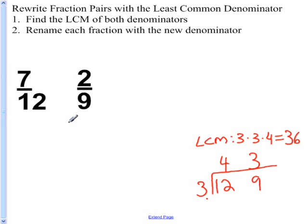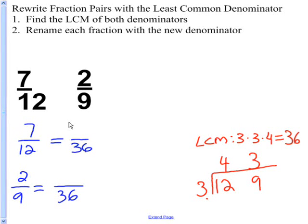Now, I want to rewrite each of these fractions with 36 in the denominator. So 7/12, I want to rewrite it so it has 36 in the denominator. 2/9, I want to rewrite that so it has 36 in the denominator. So what I do is I think to myself, 12 times what gives me 36? And the answer is 12 times 3 gives me 36. So I also want to multiply 7 times 3. Because by multiplying the numerator and denominator by the same number, I keep my fraction equivalent. So 7/12 is equal to 21/36. On the second fraction, 9 times 4 is 36. So I also want to multiply my numerator 2 times 4. 2 times 4 is 8. So now I've renamed both fractions with the least common denominator: 21/36 and 8/36.